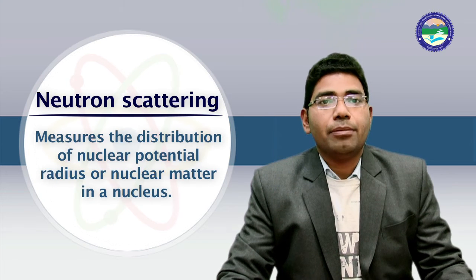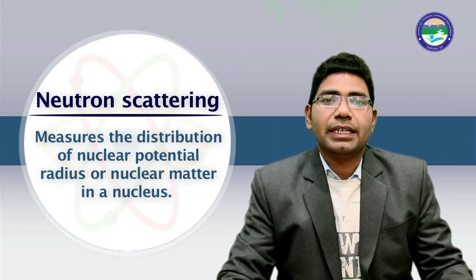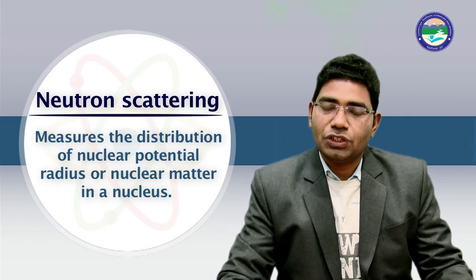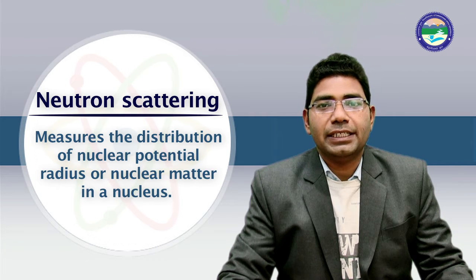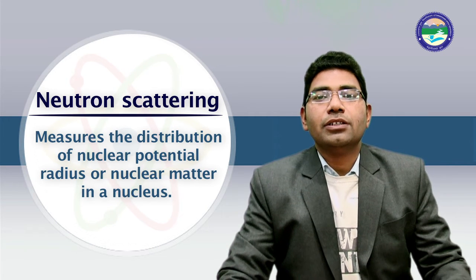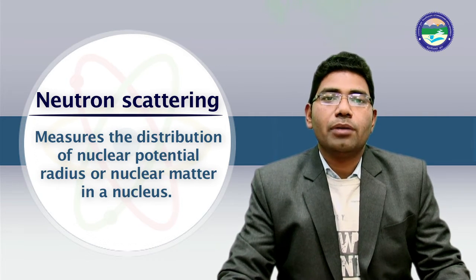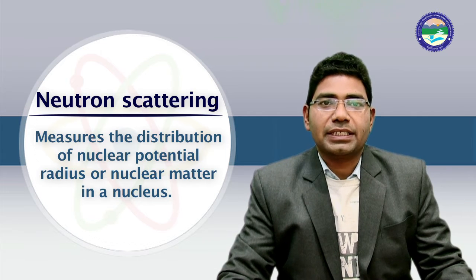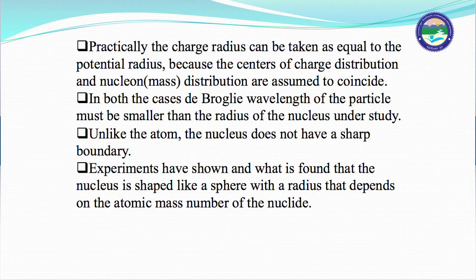On the other hand, we have neutron scattering. This measures the distribution of nuclear potential radius or nuclear matter. Practically, the charge radius can be taken as equal to the potential radius because the center of the charge distribution and the nucleon distribution are assumed to coincide in both cases.